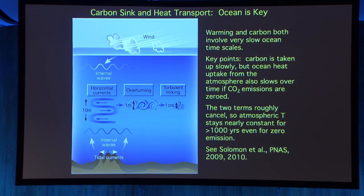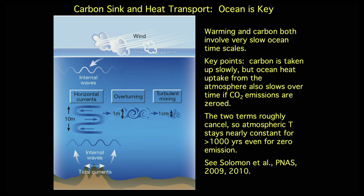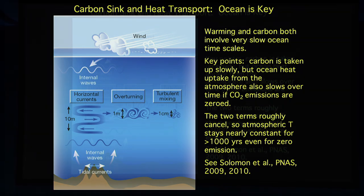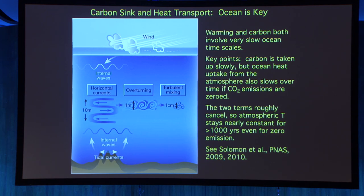Why does this happen? It fundamentally has to do with the fact that warming and carbon both involve the very slow ocean timescales. Carbon is taken up slowly, but the ocean is also taking up heat from the atmosphere, and that slows down over time if you stop emitting CO2. So the two terms just happen to roughly cancel—there's no real physical reason why they should do that, but they do. The net outcome is to keep temperatures essentially constant for 1,000 years.